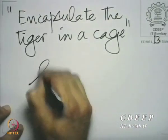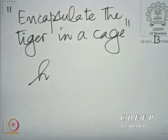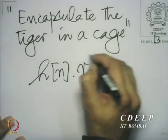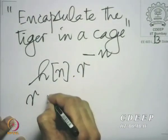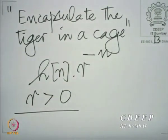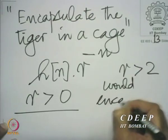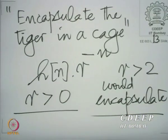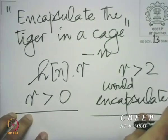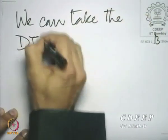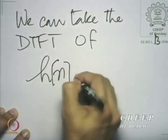We encapsulate the tiger in a cage by multiplying it. A cage is stronger than the tiger. So we encapsulate the tiger by forcing an even more controlling term on that sequence — multiply h(n) by r^(-n), where r is a number greater than 0. For example, if you multiply this sequence by such an exponential where r is greater than 2, it would get encapsulated. With r > 2 encapsulating the tiger, we can now take the DTFT of the encapsulated sequence h(n) * r^(-n). For example, take r = 2.5 — then the DTFT of h(n) * r^(-n) certainly exists.